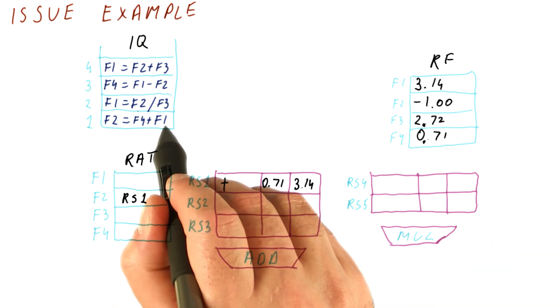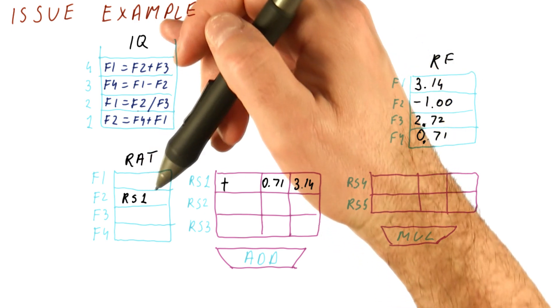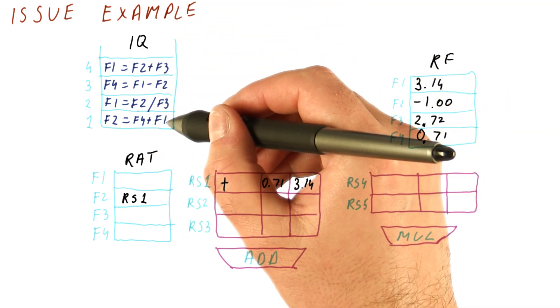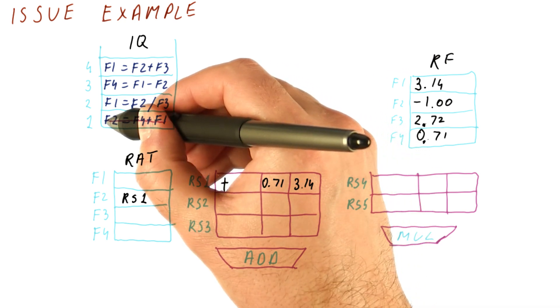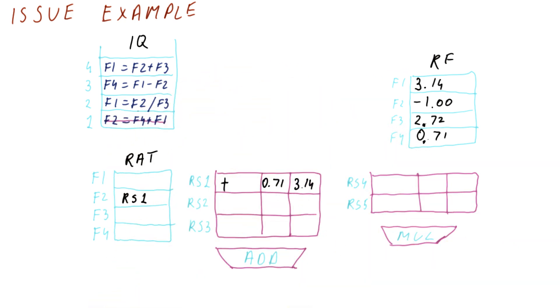One final step that we will do is remove this instruction from the issue queue. And what's going to happen now is this is going to shift down. But for my example, that's going to be very difficult to do. So I'm just going to cross out these instructions. So this just means that this instruction has been removed from the issue queue.